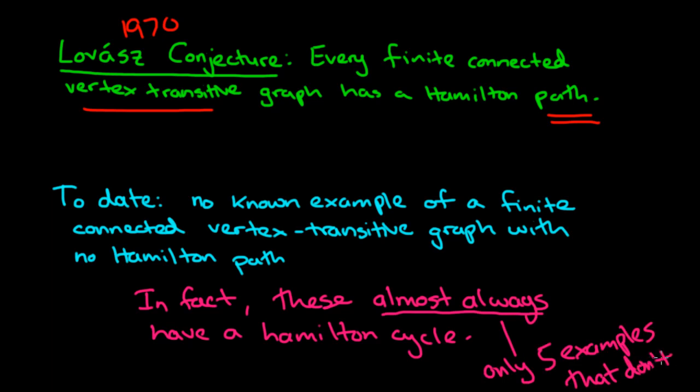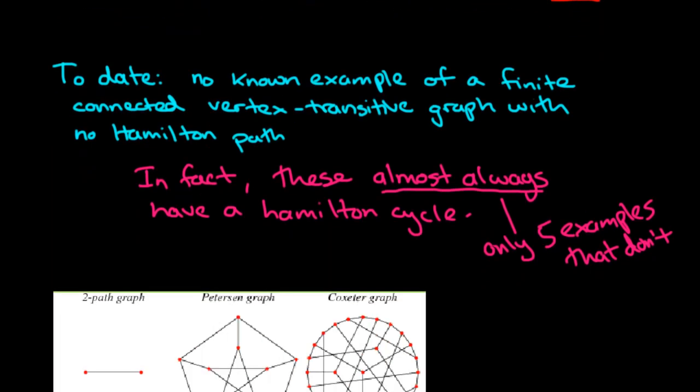You know, what I mean by that is there are only five examples of finite connected vertex transitive graphs which do not have a Hamilton cycle, which is somehow even better than a Hamilton path. So what are these five examples? They may not be the only five examples. There may be others, but they're the only five that are known. I've taken this from wolframmathematics.com.